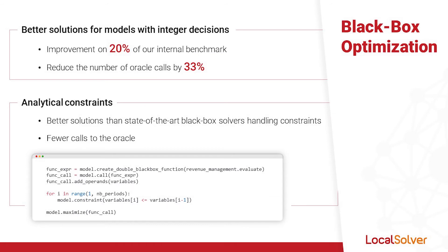Let's now focus on Local Solver's black box features. Black box optimization is useful to optimize a function that is computationally expensive to evaluate or for which the user does not have an analytical formulation. The need for such a function often arises in design engineering where complex physical systems have to be simulated with greater accuracy, or in finance where there can be a lot of uncertainty. In this new version, Local Solver's performance on black box models with integer decisions has significantly improved. The solutions provided on our internal benchmark are 20% better on average and the number of calls to the black box function was reduced by a third, making the resolution much faster.